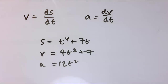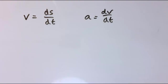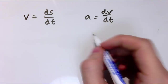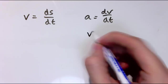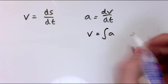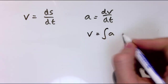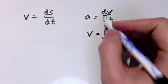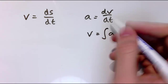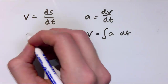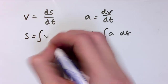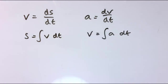An immediate consequence of this is that we can also go in the other direction. If acceleration is dv/dt, then v is the integral of the acceleration with respect to time. If I differentiate to go one way, I can integrate to go the other way. Similarly, displacement is the integral of the velocity with respect to time.